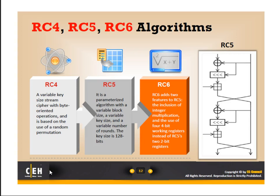They changed it with the second iteration, RC5. RC5 now uses a variable block size, which is kind of cool, and also a variable key size. Both of those change, along with a variable number of rounds, which makes it very, very difficult to go through and try to crack.